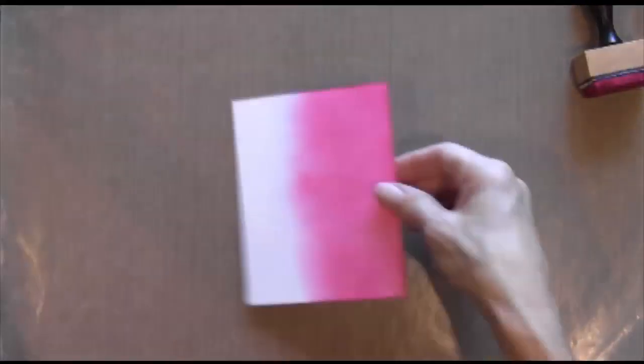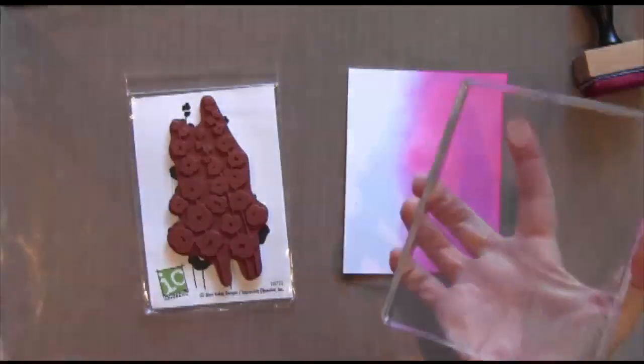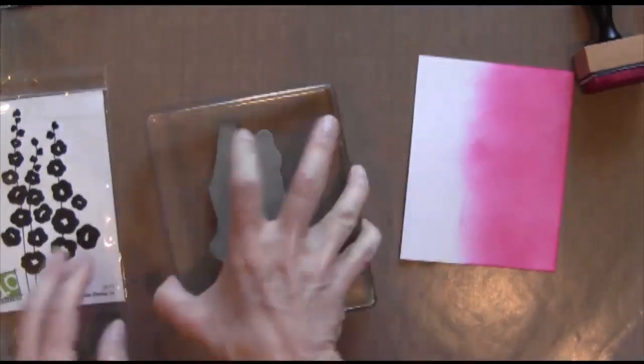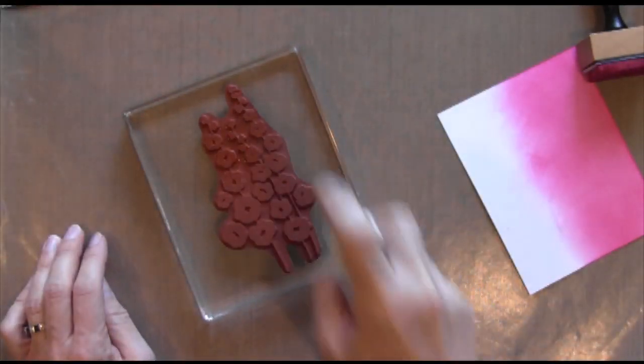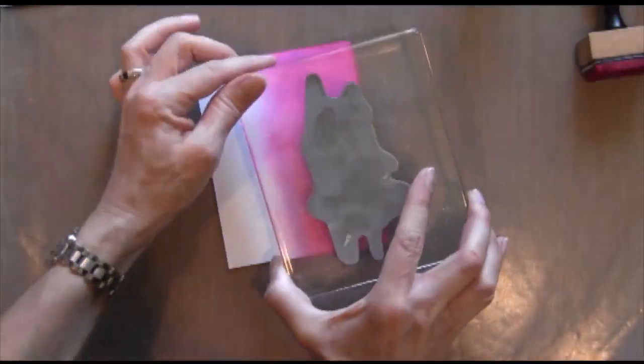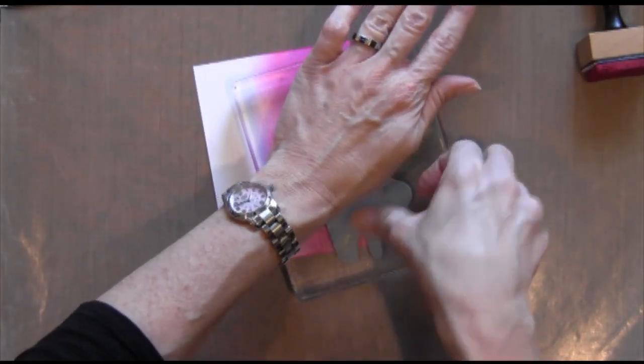So now I'm going to take another stamp called Full Bloom Hollyhocks. I'm going to take some plain water and spritz it, a lot of it actually. And then I'm going to press it down onto my cardstock and hold it there for a few seconds.